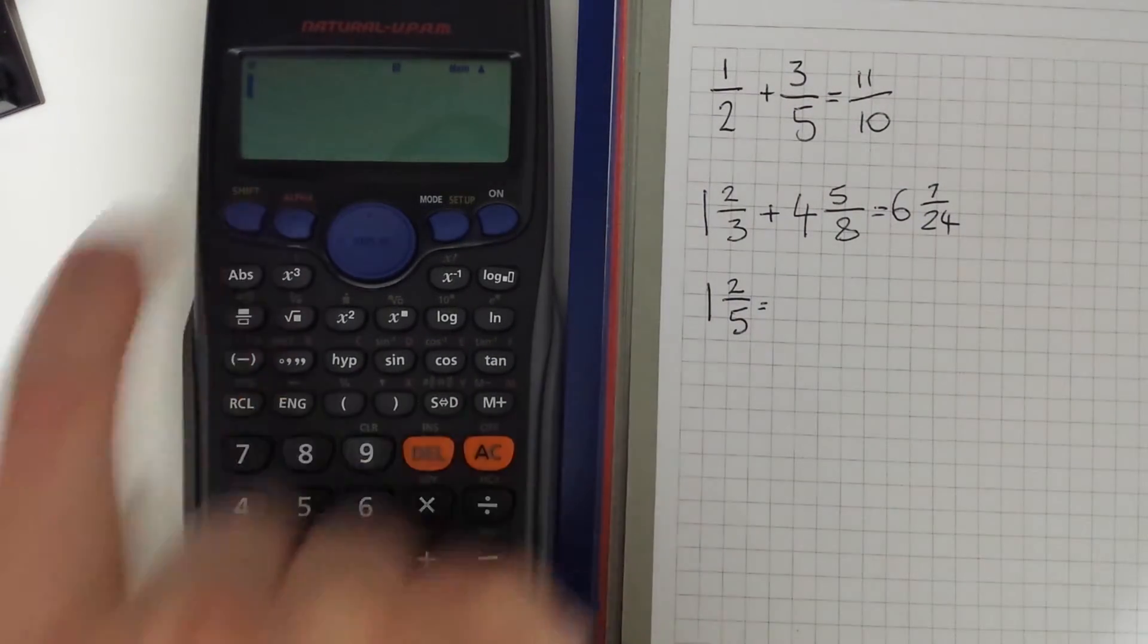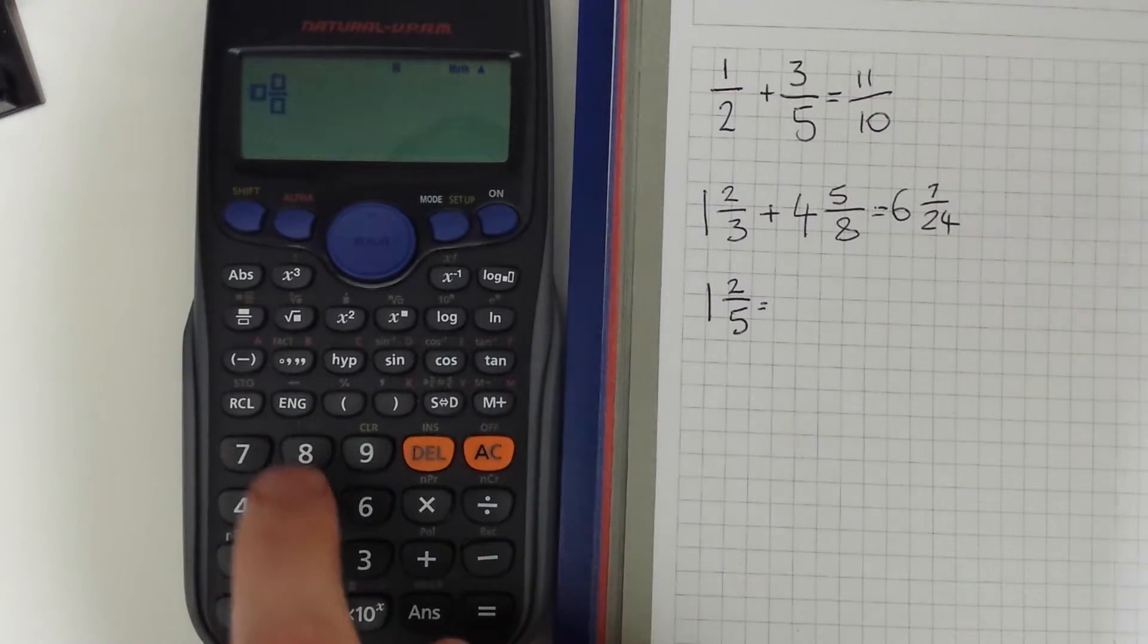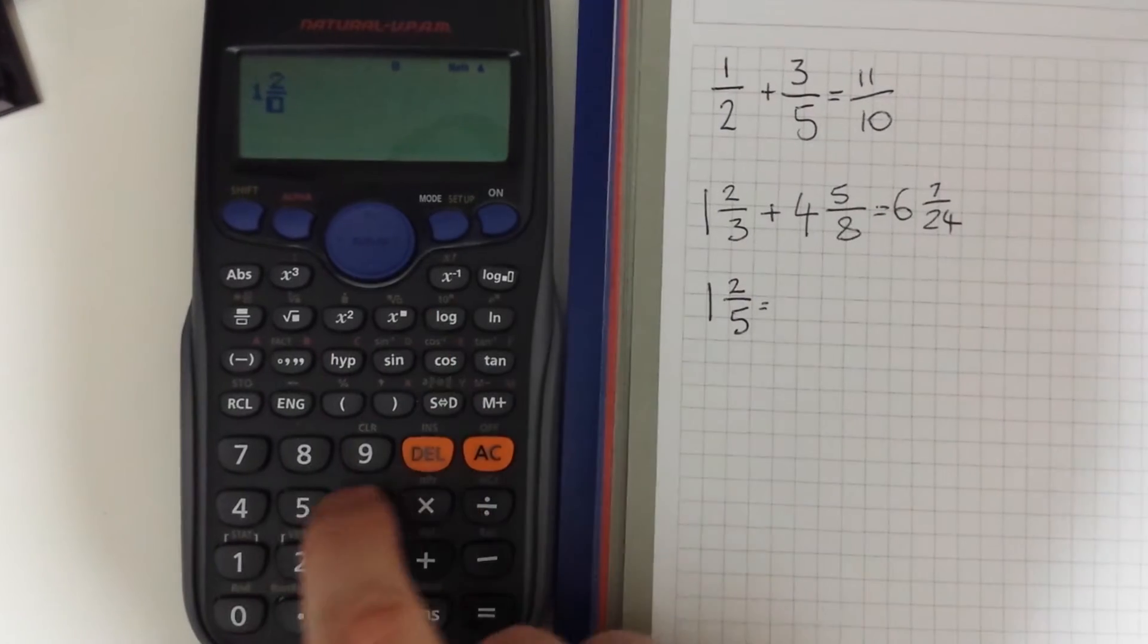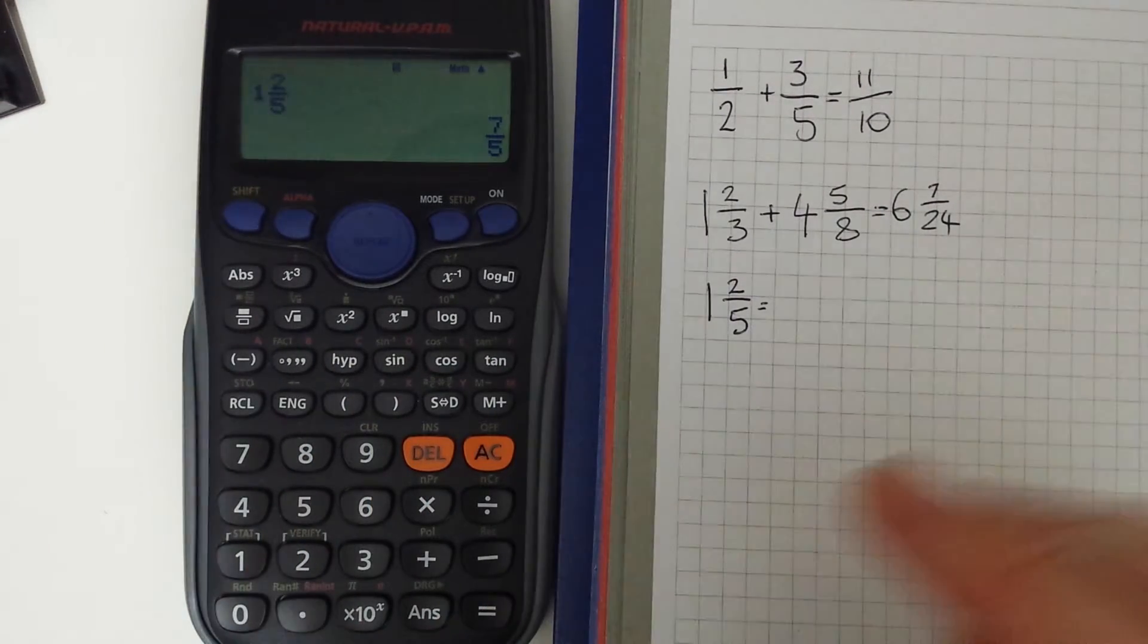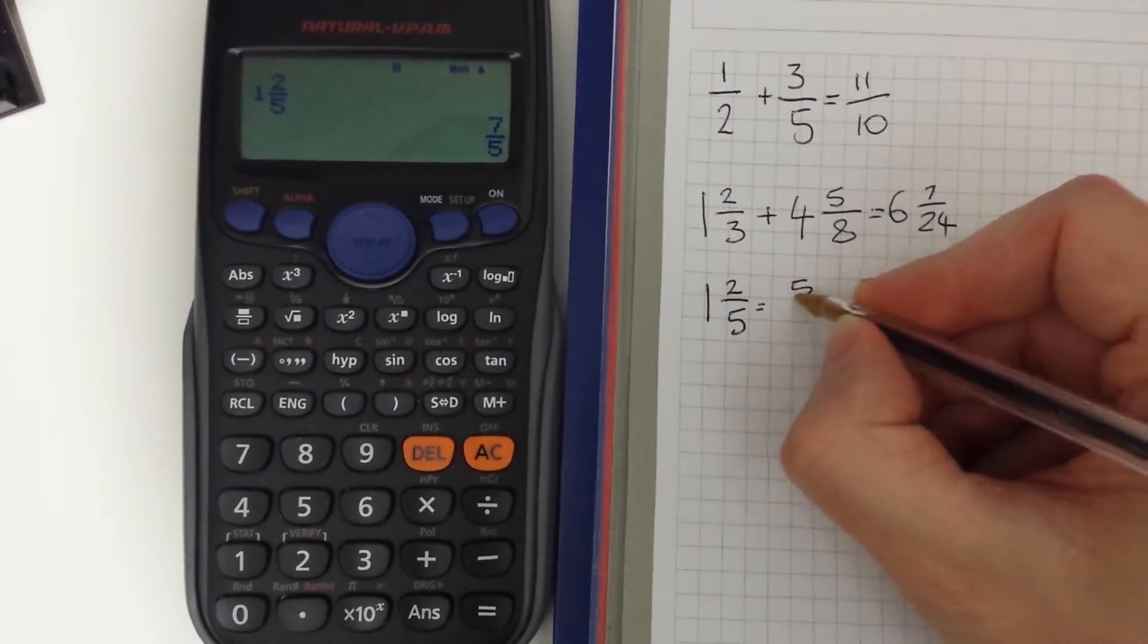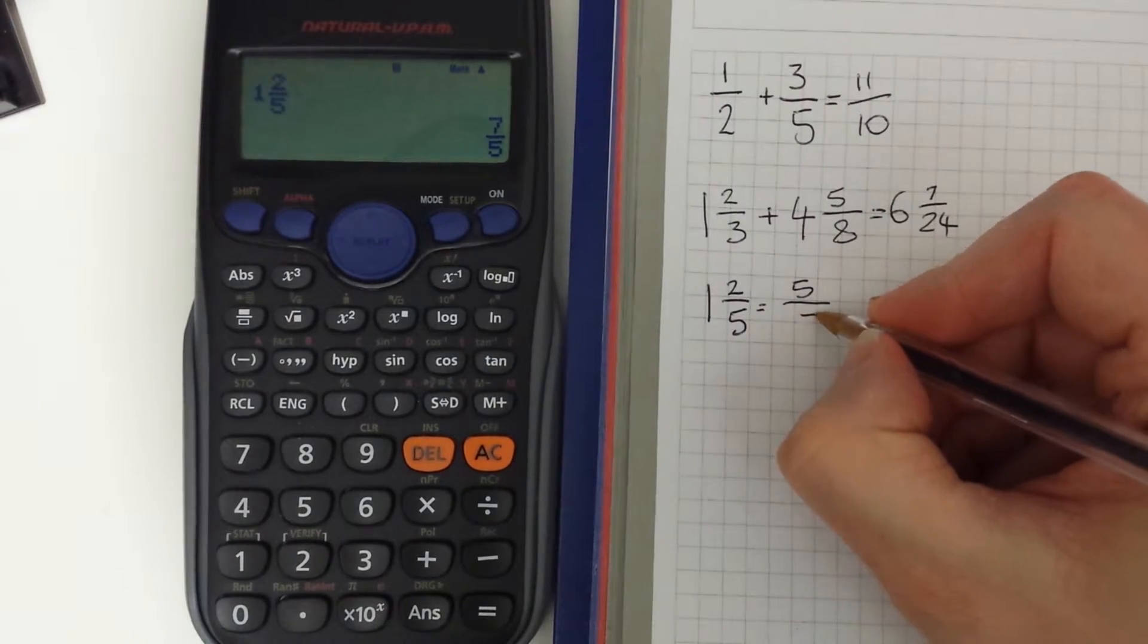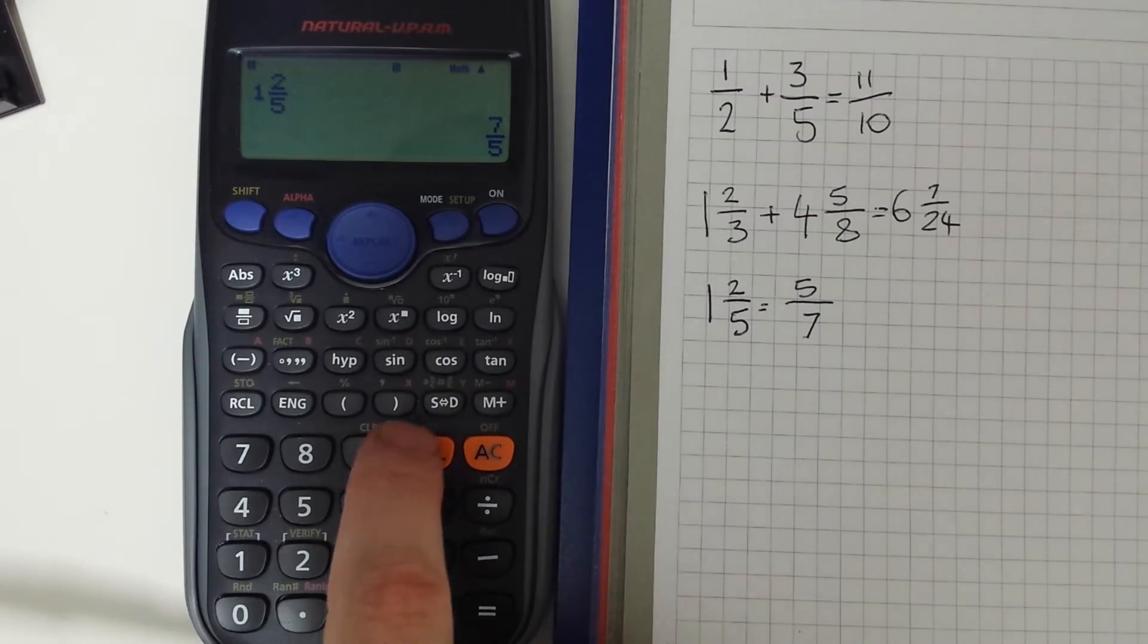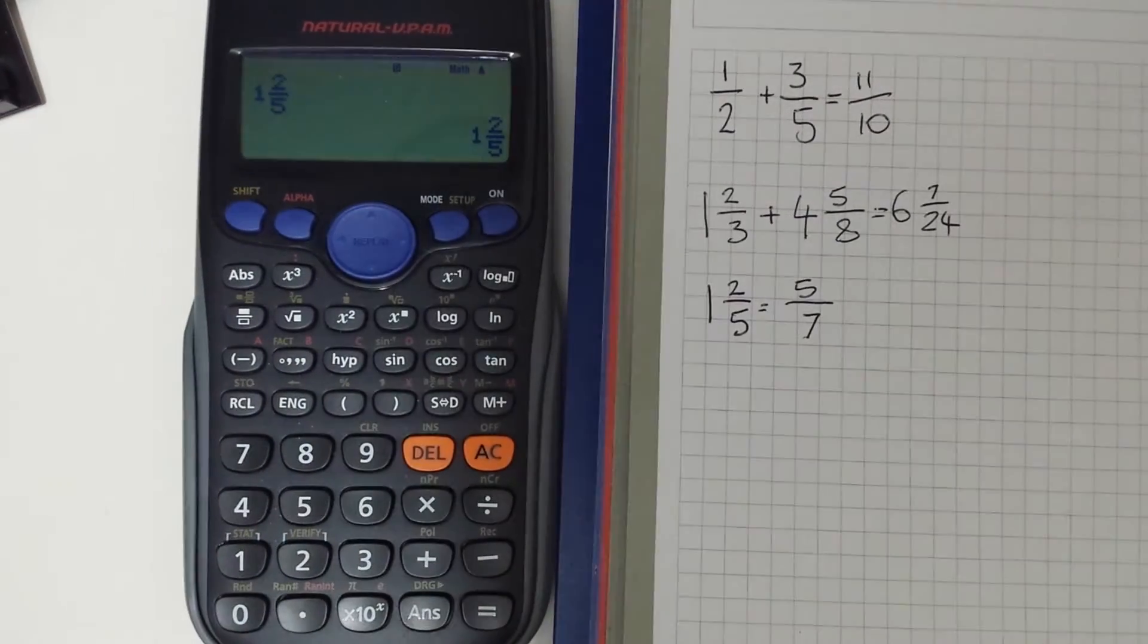So shift fraction key 1 and 2 fifths and if we press equals that will actually convert into an improper fraction and again shift and sd will convert it back.